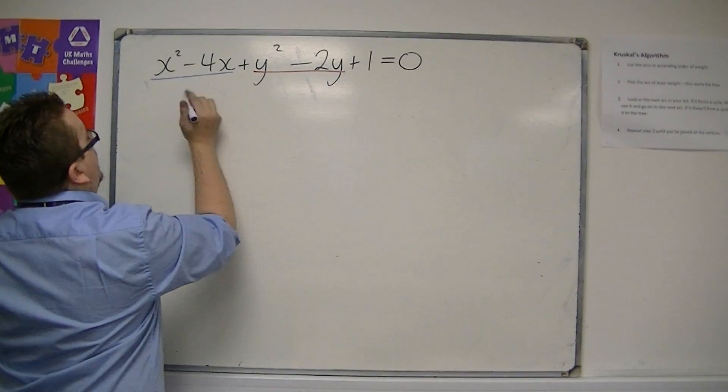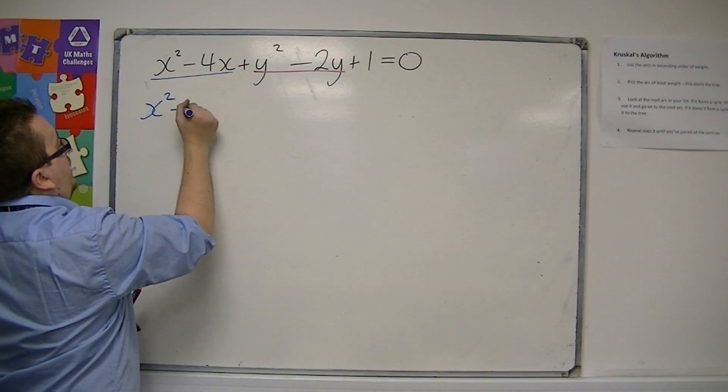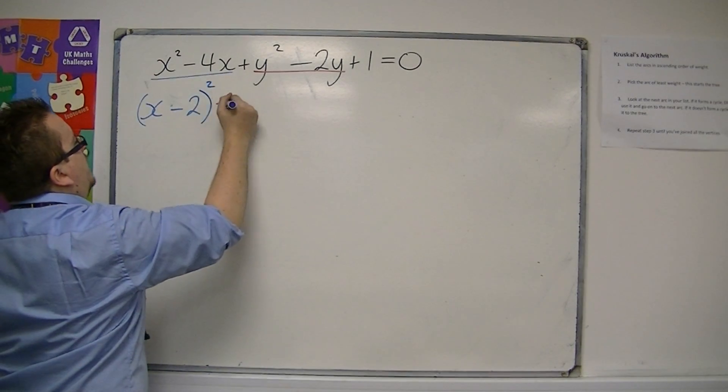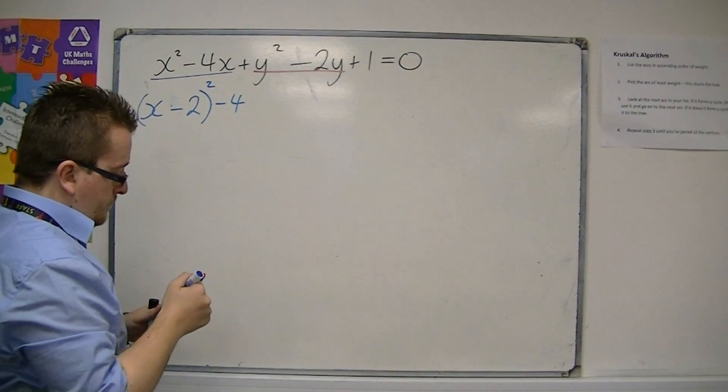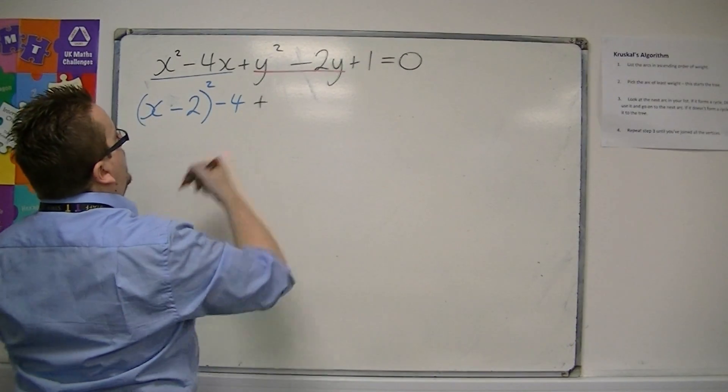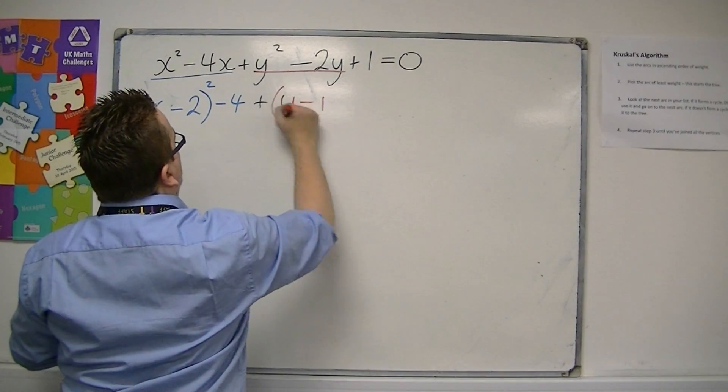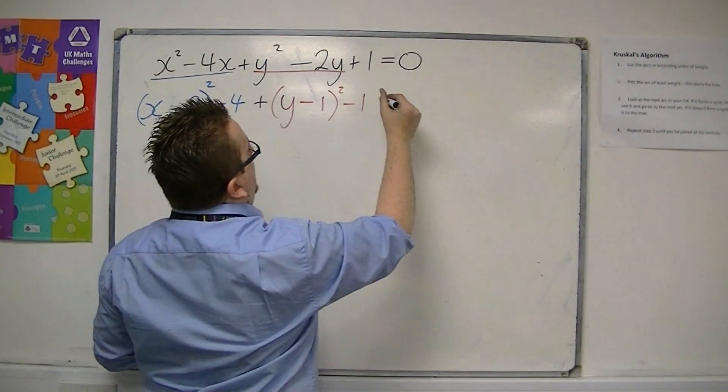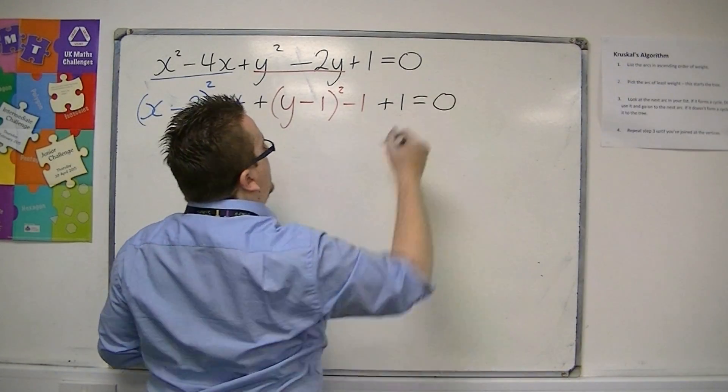So the x squared minus 4x, we've already done that before, so it's x minus 2 all squared, take away 4, plus, now for the y's, we get y minus 1 squared, take away 1, and we've still got that plus 1 equals 0 on the end.